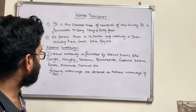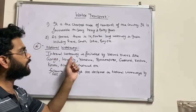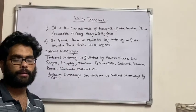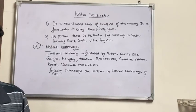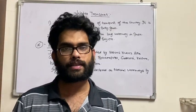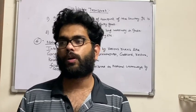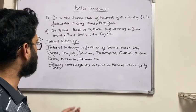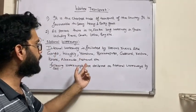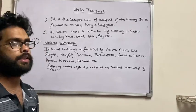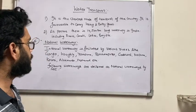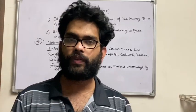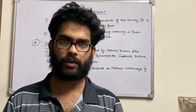Now the second topic is national waterways. Internal waterways are facilitated by various rivers in our country. The important rivers in India which are used for transport include the Ganga, Hooghli, Yamuna, Brahmaputra, Mahanadi, Godavari, Krishna, Kaveri, Narmada, etc. These are the important rivers on which we have developed various waterways.